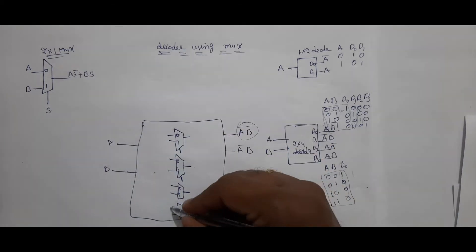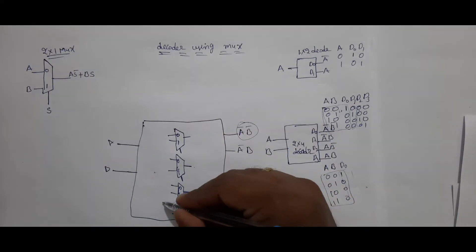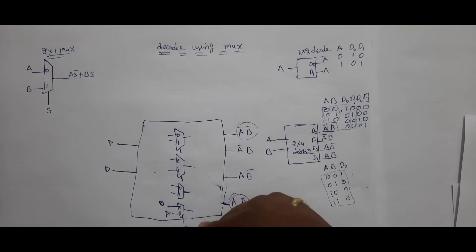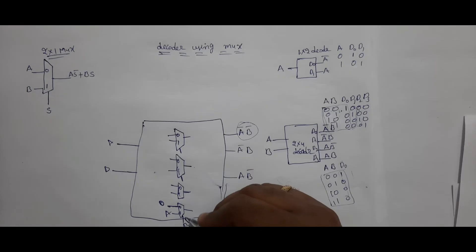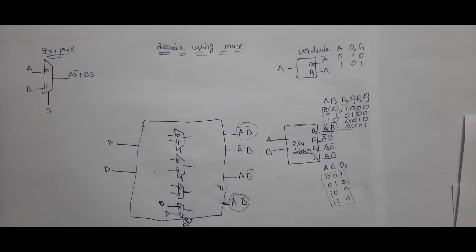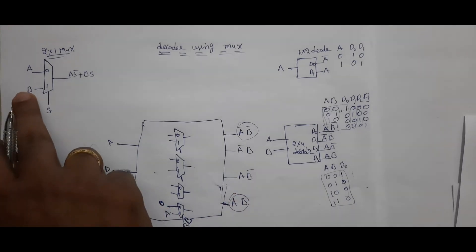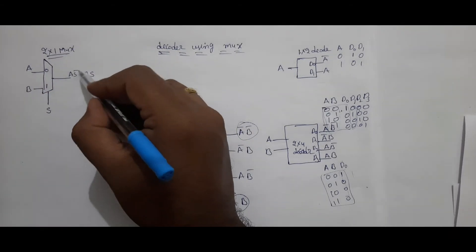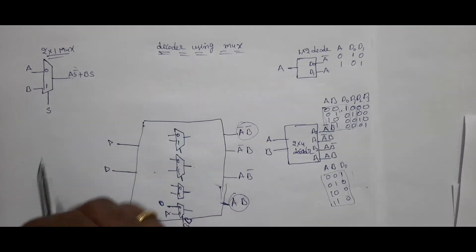If A is at position 0, this term will not come. That's why this input is connected to 0, this input is connected to A, and this input is connected to B. If A is 0, this term will not come out.